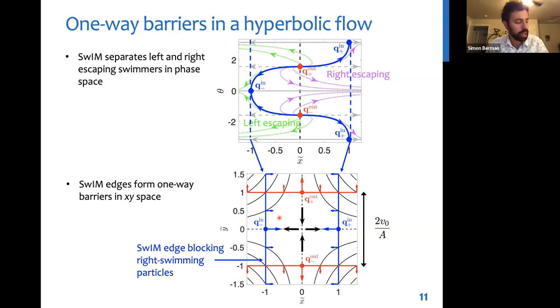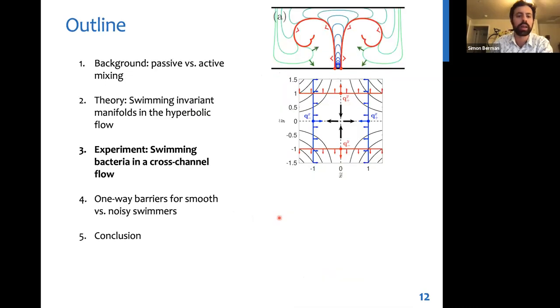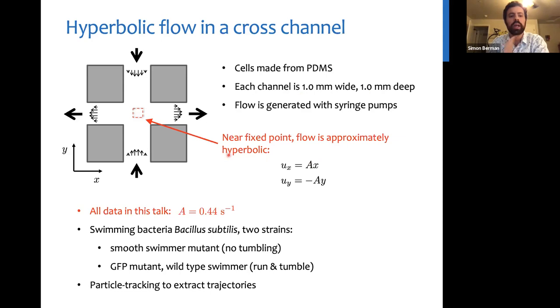So John in Tom Solomon's lab carried out experiments where a microfluidic channel was fabricated in this cross-shaped geometry. Fluid was pumped in along the vertical axis and taken out along the horizontal axis using syringe pumps. And it turns out that there's a fixed point at the center of this channel. And measurements of the fluid velocity very near the fixed point in this red box, this region of interest, show that in fact the flow is approximately the linear hyperbolic flow that I was just talking about.